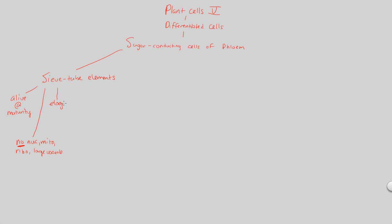Sieve tube elements are going to be elongated — we've seen this pattern many times. They're found at the ends of cell walls, and at those ends we're going to see sieve plates. Sieve plates are present with pores, and these pores are essentially the drainers of these cells — draining something very important: sugar. Sugar has to move from cell to cell, and sieve tube elements drain out the specific sugar needed. This process will have the help of companion cells, which we'll get to shortly.